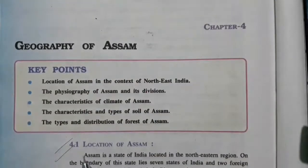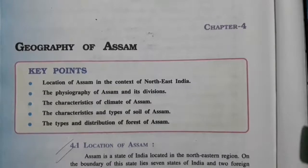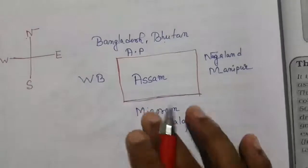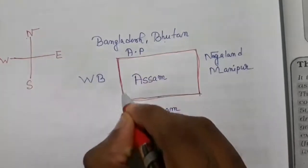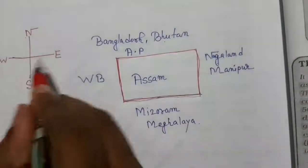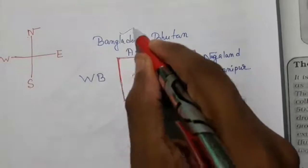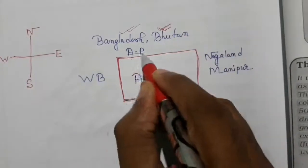Geography of Assam, Chapter 4: Location of Assam. Assam is a state of India located in the north-eastern region. On the boundary of the state lie seven states of India and two foreign countries. Looking at the directions — on the north you will find two countries: Bangladesh and Bhutan, and one state of India, that is Arunachal Pradesh.